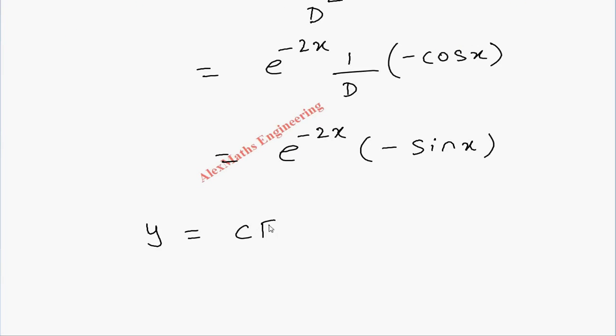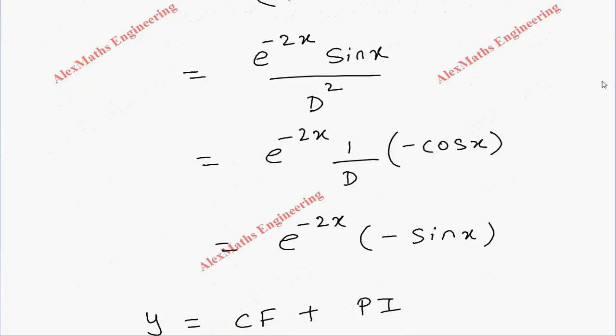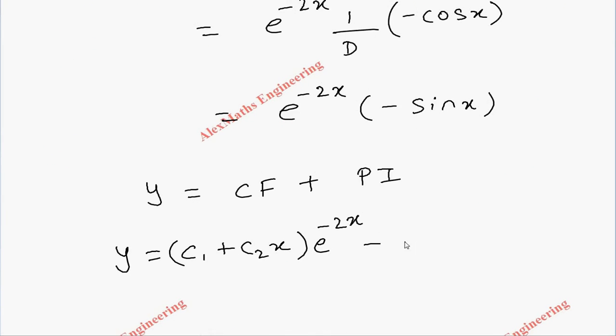Now coming to the full solution, y is CF plus PI. So y equals (c₁ + c₂x) e^(-2x), and then after that, PI is -e^(-2x) sin(x).